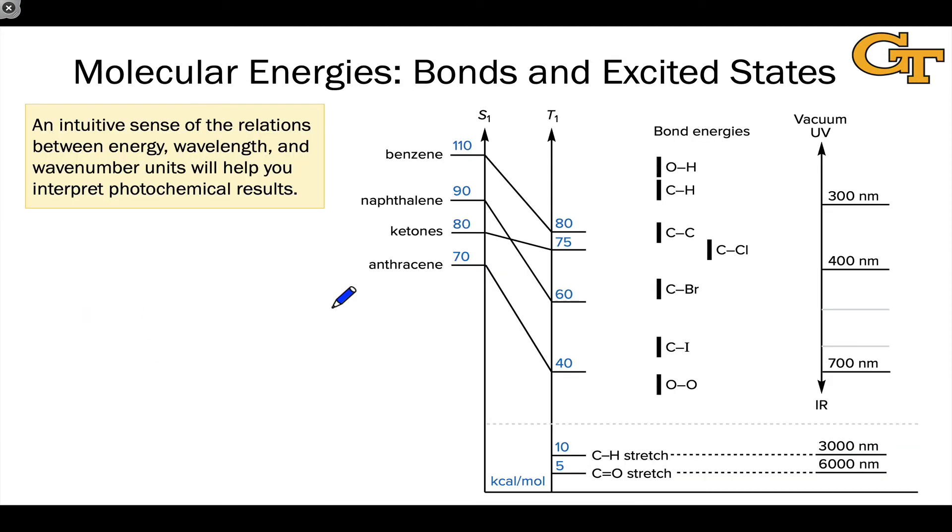One thing we haven't yet done with energy is appreciated how these energies of light, which we looked at on the last slide, relate to bond energies. What wavelengths of light, for example, if we connect wavelength to energy, what wavelengths of light are associated with the bond energies of CC, CH, carbon halogen, oxygen, hydrogen, carbon oxygen bonds, all of these common bonds in organic molecules have average bond energies. Where do those energies fall in the electromagnetic spectrum? The answer generally is in the UV or in the case of weak bonds, the visible.